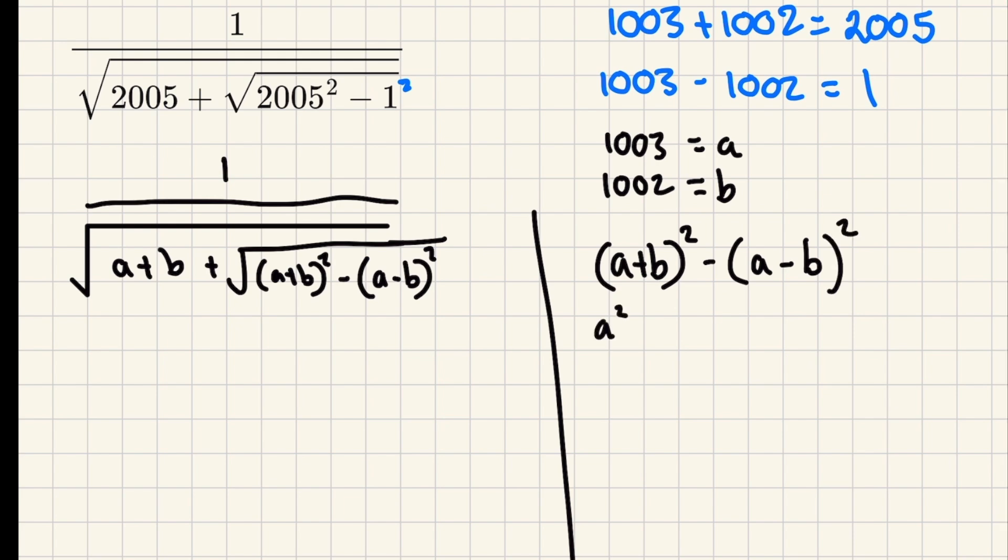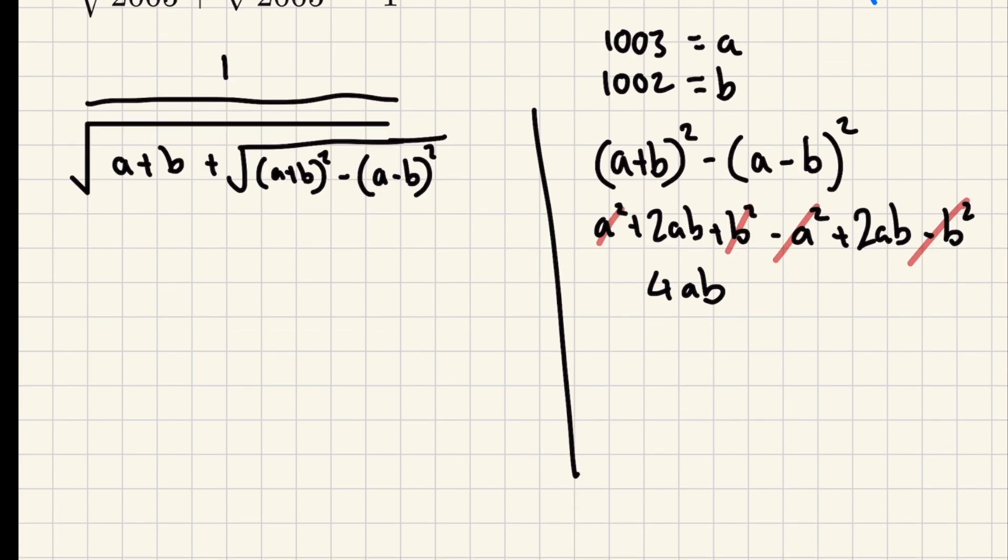Now when you expand this out, you'll get a squared plus 2ab plus b squared, minus a squared plus 2ab, and then minus b squared. Can you see what's going to happen? This is going to cancel with this, this is going to cancel with this. Those two are going to sum because they have opposite signs, and you're going to end up with 4ab.